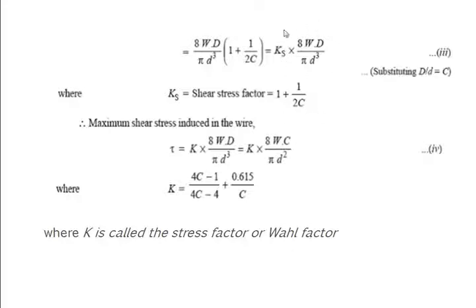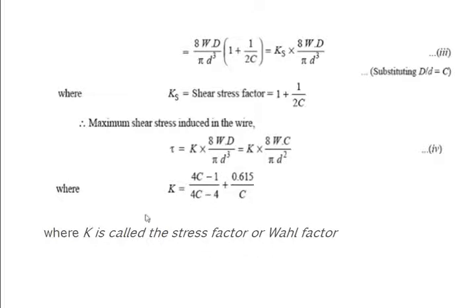The term (1 + 1/2C) is called the shear stress factor. There is another factor called the Wahl factor, which accounts for stress concentration. The Wahl factor K equals (4C - 1)/(4C - 4) + 0.615/C. The maximum shear stress tau equals K times 8WD divided by pi*d^3, where K is the Wahl factor considering all stress factors.